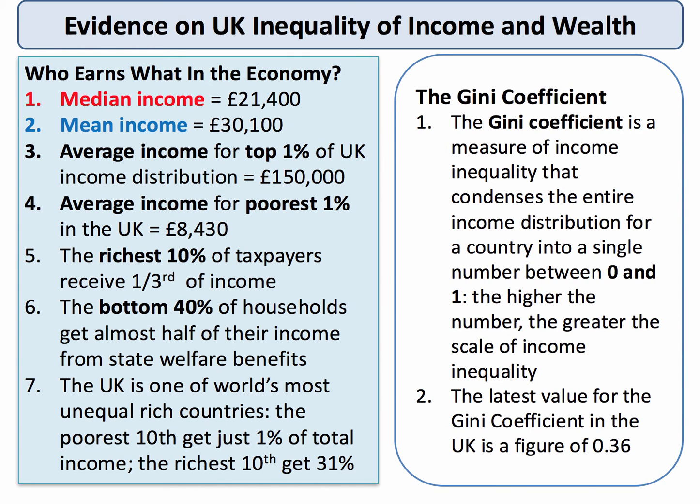To what extent is income and wealth in the UK unevenly distributed? In the UK, recent figures from around 2013 show that median income was around £21,400. Median, of course, is the middle value of the incomes in the distribution. The mean income — income per person — was significantly higher, just over £30,000. That is because the mean is dragged up by the inequality, particularly right at the top of the income distribution. Average income in the UK for the top 1% was around £150,000, whereas for the poorest 1% in the UK, less than £10,000.